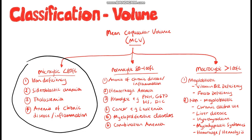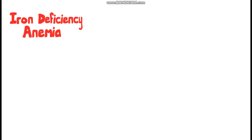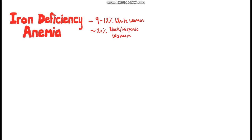The microcytic anemias include iron deficiency anemia, sideroblastic anemia, anemia of chronic disease or inflammation, and thalassemia. Let's start with iron deficiency anemia, the most common anemia. Around 9–12% of white women have iron deficiency anemia, while in black and hispanic women the prevalence is nearly 20%. It's also estimated that around 10% of patients over 65 with iron deficiency anemia have an underlying gastrointestinal cancer, so in these patients it's crucial to rule it out.